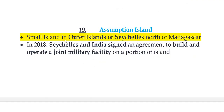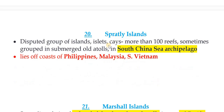The Assumption Island is a small island in the outer islands of Seychelles, north of Madagascar. In 2018, India signed an agreement with Seychelles to build and operate joint military facilities on a portion of the islands, giving India strategic significance in the Indian Ocean. The Spratly Islands are a disputed group of islands — more than 100 reefs, sometimes grouped as submerged atolls — in the South China Sea. They lie off the coasts of Philippines, Malaysia, and southern Vietnam.